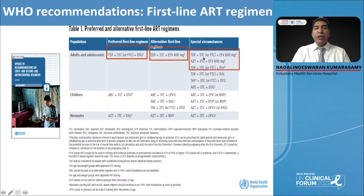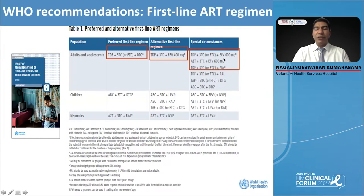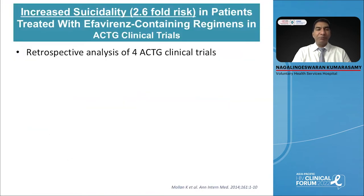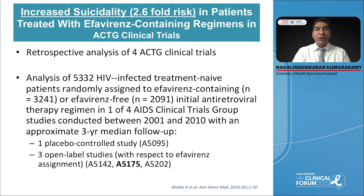In the past we used a combination of tenofovir, lamivudine, and efavirenz 600mg, which is now not recommended because of various toxicities and baseline pre-treatment resistance. Now why was efavirenz-containing therapy moved out of the guidelines? This is based on a retrospective study carried out on four ACTG NIH-funded clinical trials which compared regimens without efavirenz versus efavirenz, and showed that patients who used efavirenz-containing regimens had a 2.6-fold increase in suicidality compared to non-efavirenz-containing therapy. These trials were done in different parts of the world including Asia, India, and Thailand.